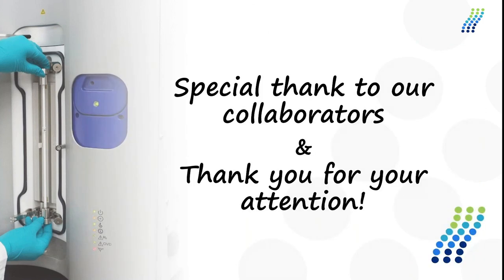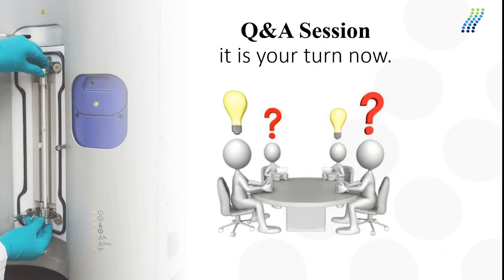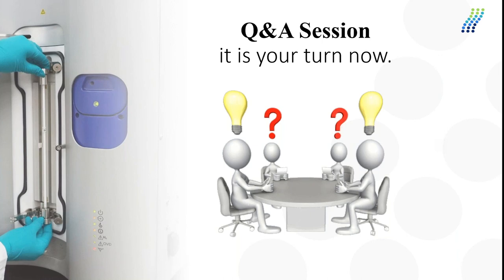Thank you for your attention and special thanks to our collaborators. I'm ready to answer your questions. The first question is about the temperature limitation of the system. The standard oven has a 20 to 250 degrees operating range. However, we have a high-temperature oven up to 500 degrees, which is just now ready to produce after an initial prototype was shipped to a customer about a year ago. So basically, you can choose whether you want the standard or the high-temperature oven.